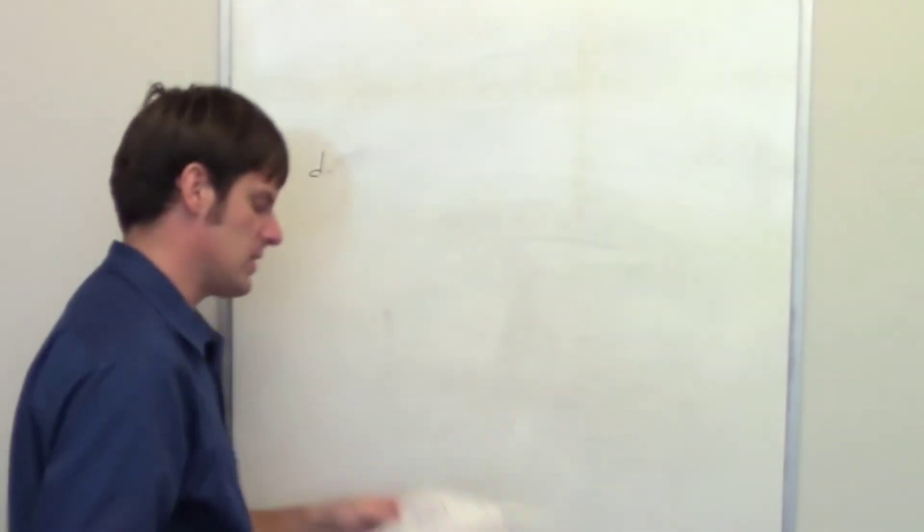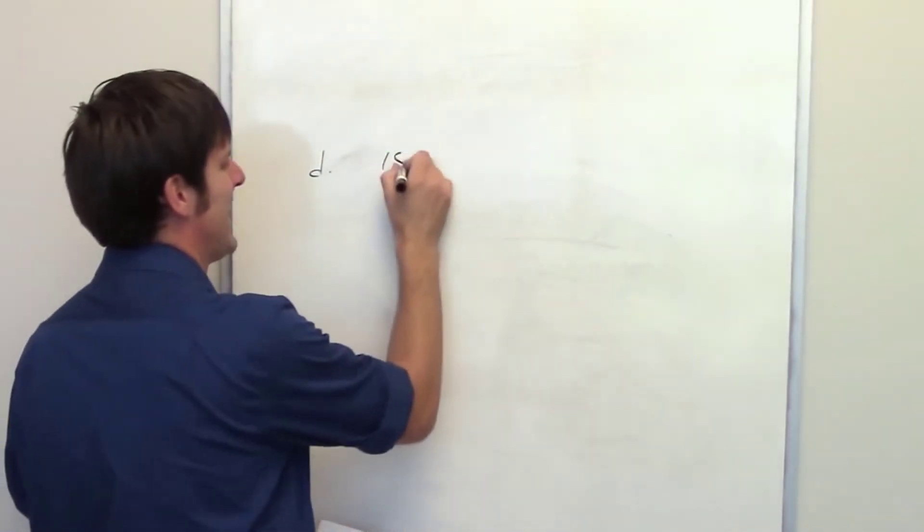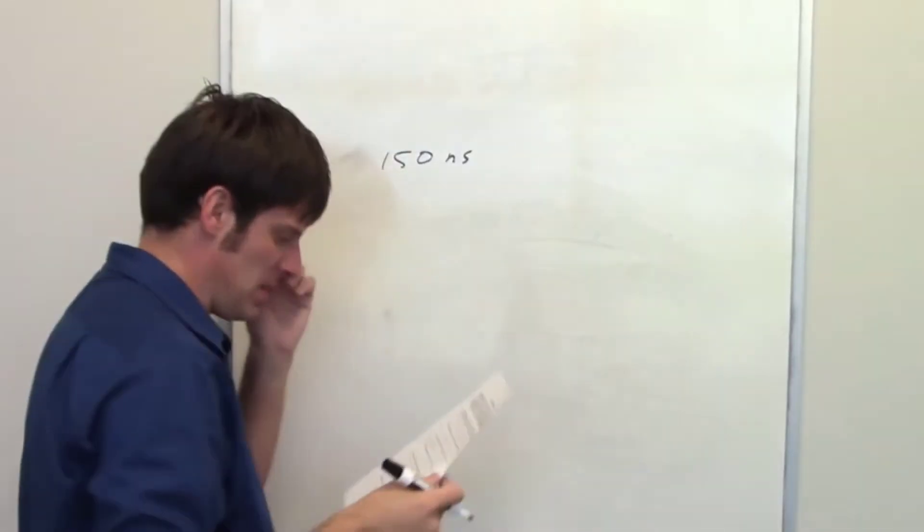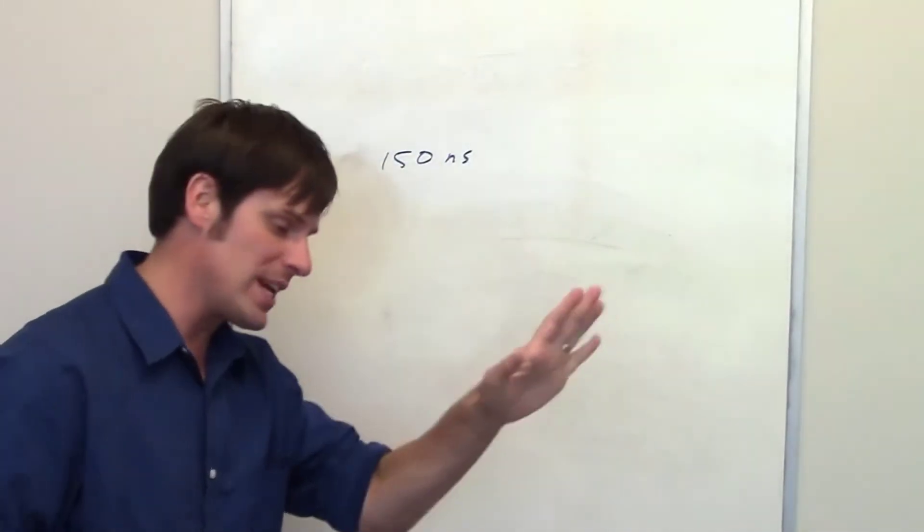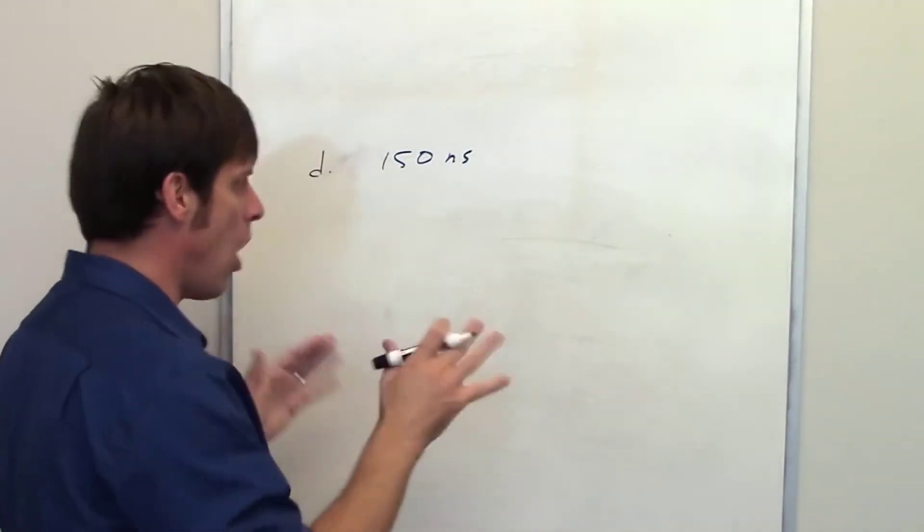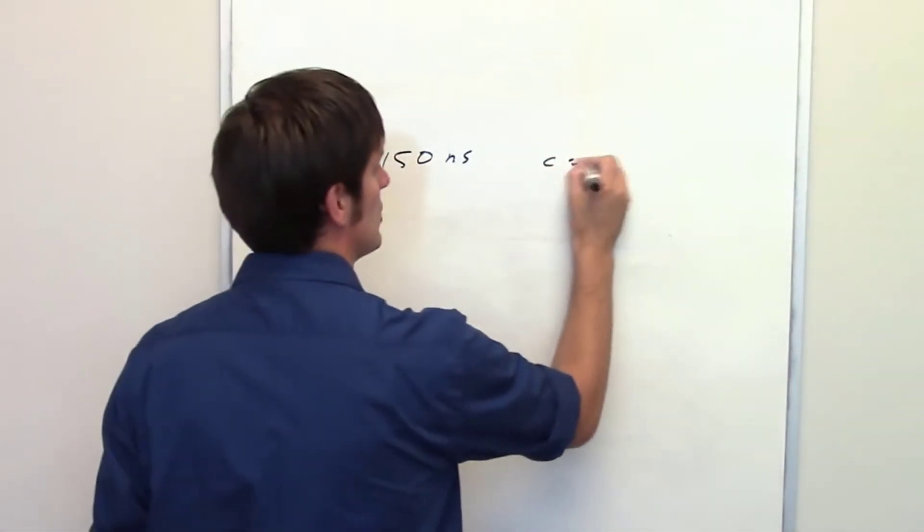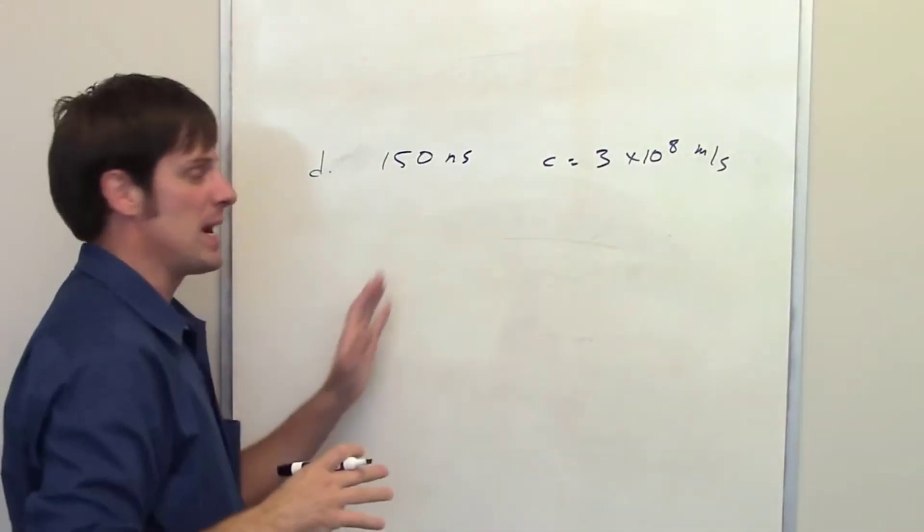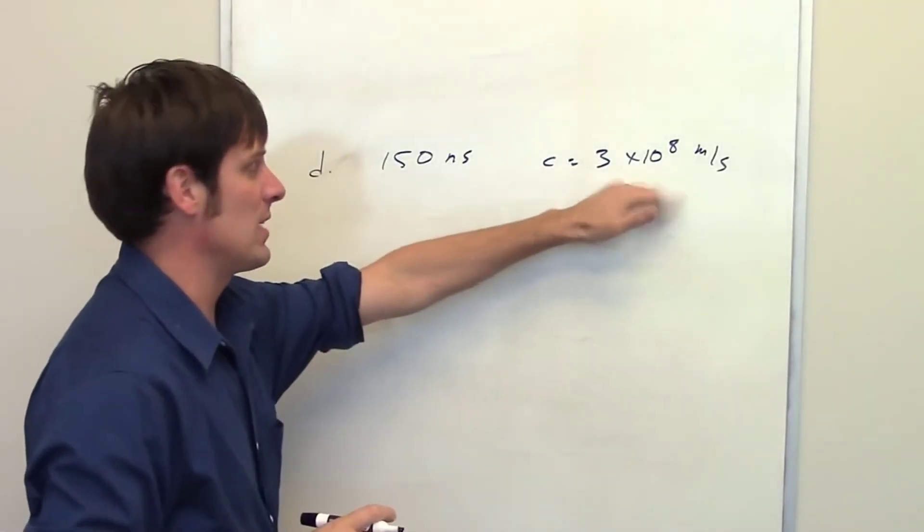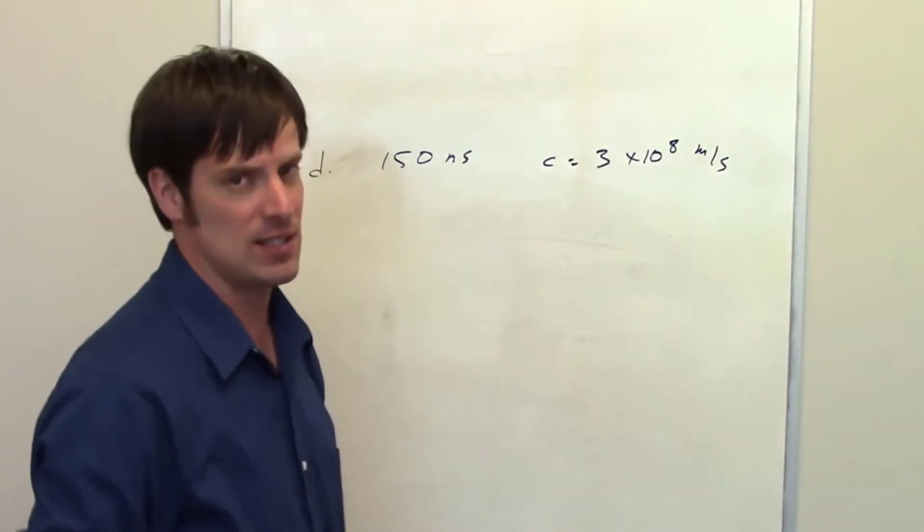In Part D of this question, we're asked, what distance does EM radiation travel in 150 nanoseconds? We have to remember that all EM radiation travels at the same speed. It doesn't matter if you're talking about radio waves or gamma waves. All forms of EM radiation travel at the speed of light, which is 3 times 10 to the 8th meters per second. If I've got a form of EM radiation that is traveling at this speed and it goes for 150 nanoseconds, what is the distance that it travels?